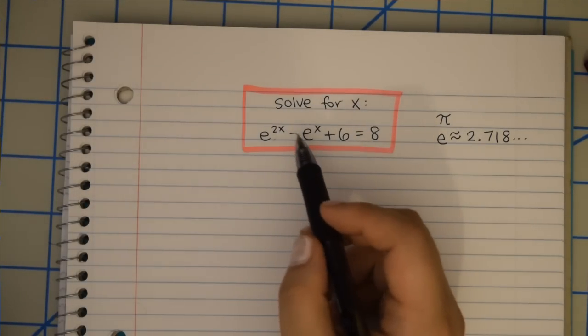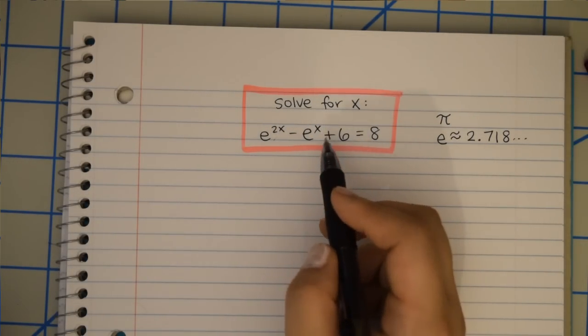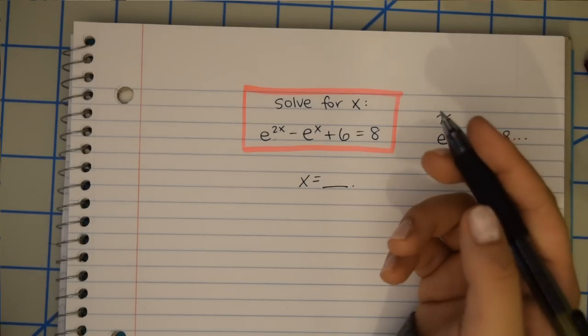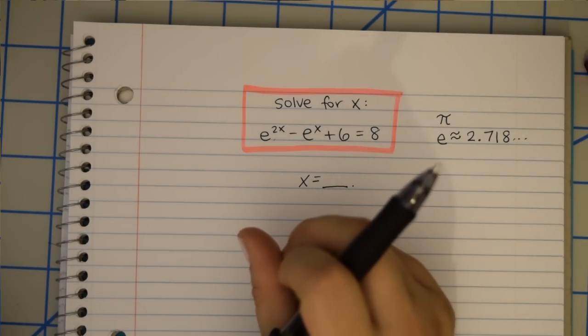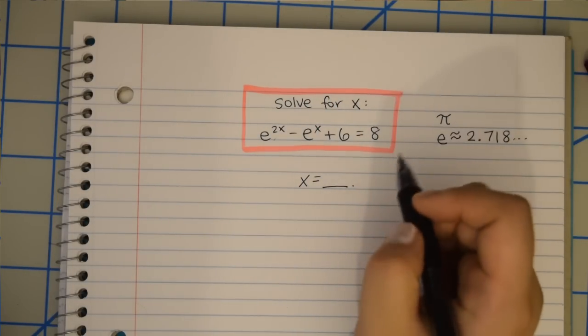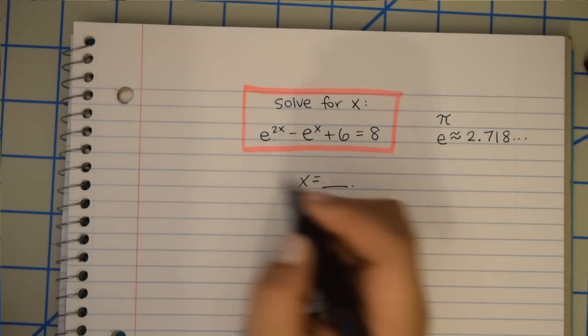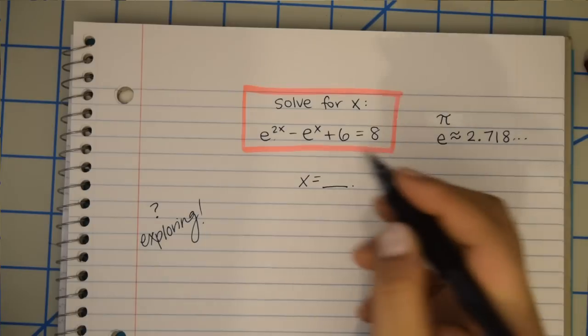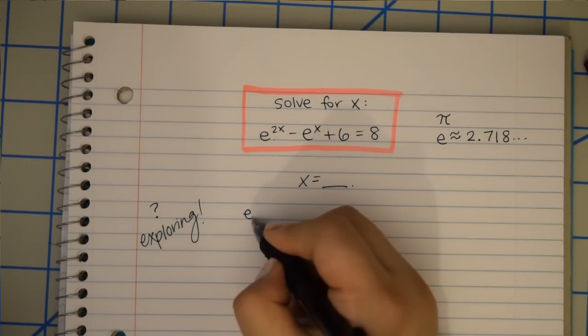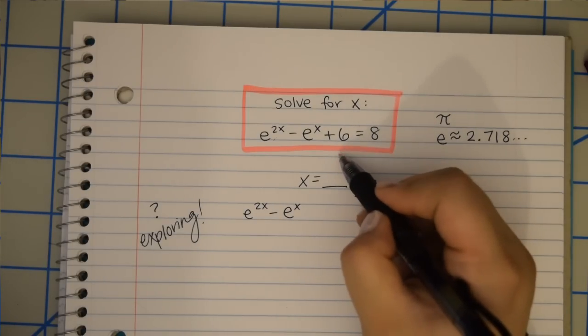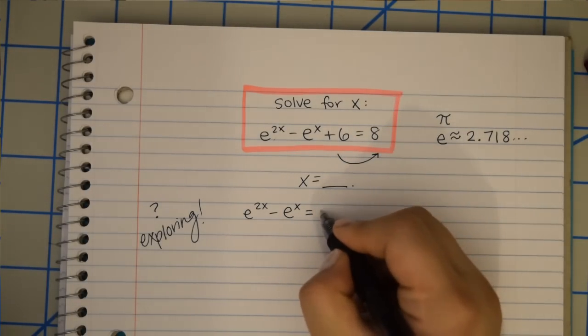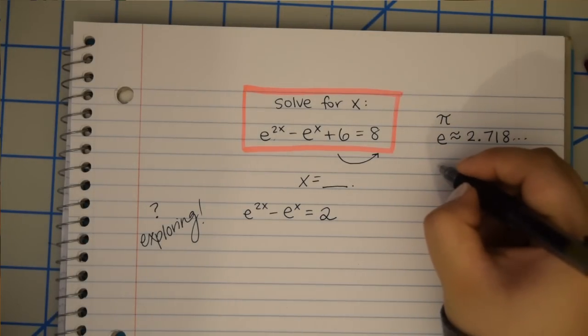So normally for algebra, it's pretty common to attempt to isolate your x on one side and then get x equals something. That's usually what it means to solve for x. So it's common to try to get all your variables on one side and everything else on the other. So you might attempt to do that here. And I encourage you to just try. So you can just put a question mark. We're exploring. It's okay. So we can try e to the 2x minus e to the x. Then I move the 6 over to the other side because it doesn't have an x in it. So 8 minus 6 is 2.